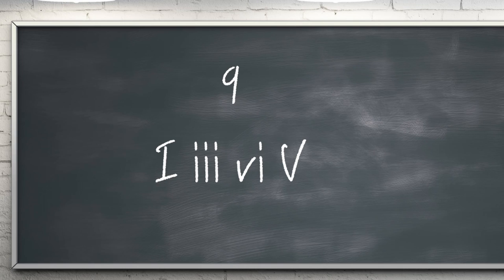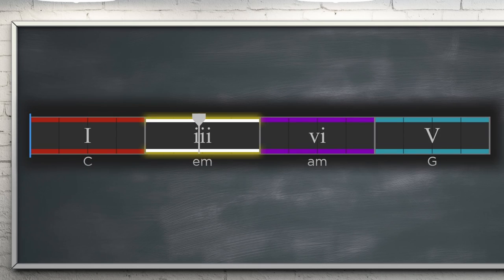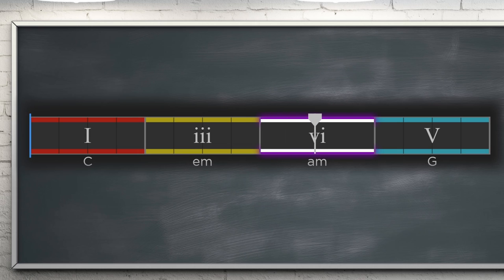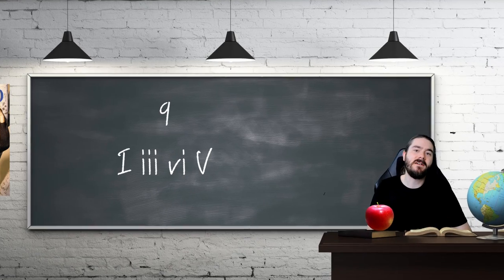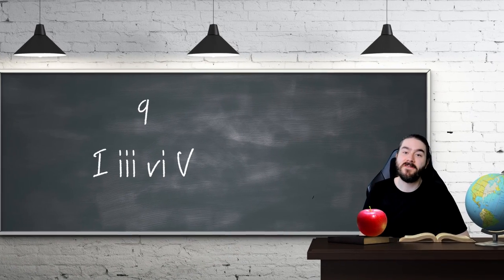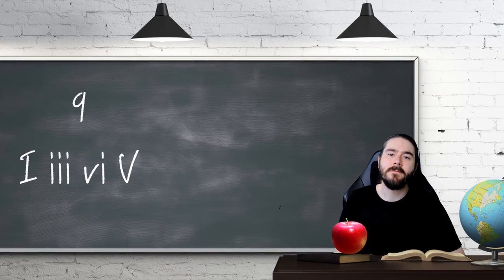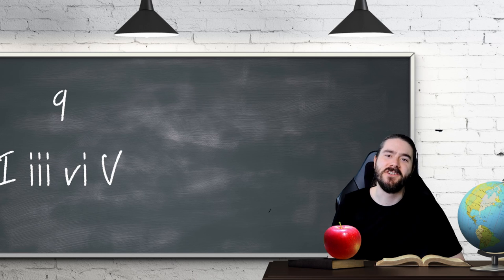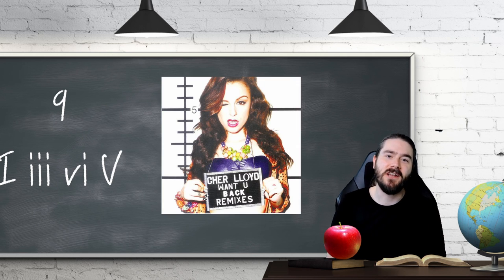In at 9 is 1-3-6-5. This is the first example that uses the three minor chord and two minor chords in total, which brings a different feel to the progression. Examples include Party in the USA by Miley Cyrus and Want You Back by Cher Lloyd.